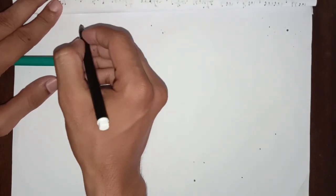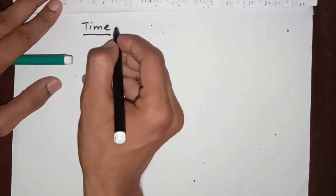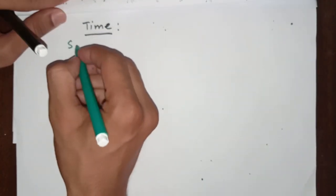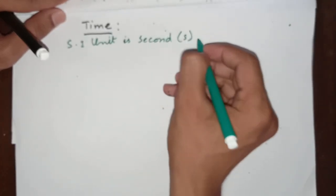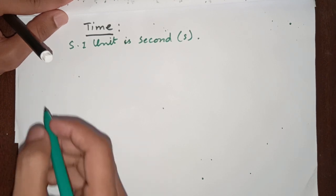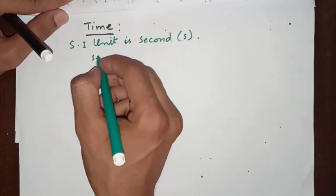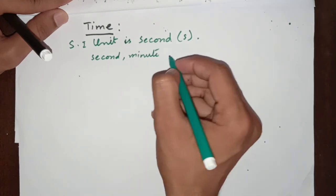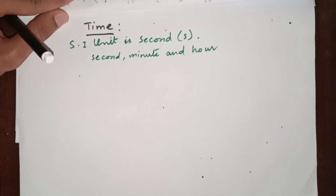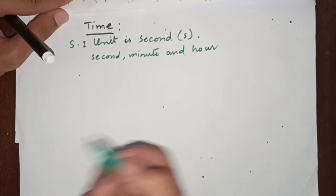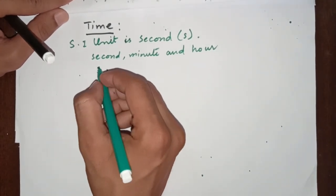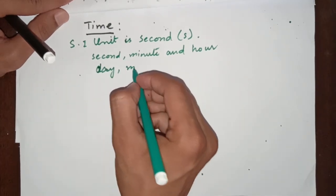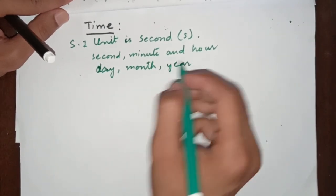The next topic we will discuss is time. The SI unit of time is second. Usually we use three different units to measure time: second, minute, and hour. But we have other units of time that are noticeable to us — for example, a day is also a unit of time, as well as week, month, and year. They are all units of time.